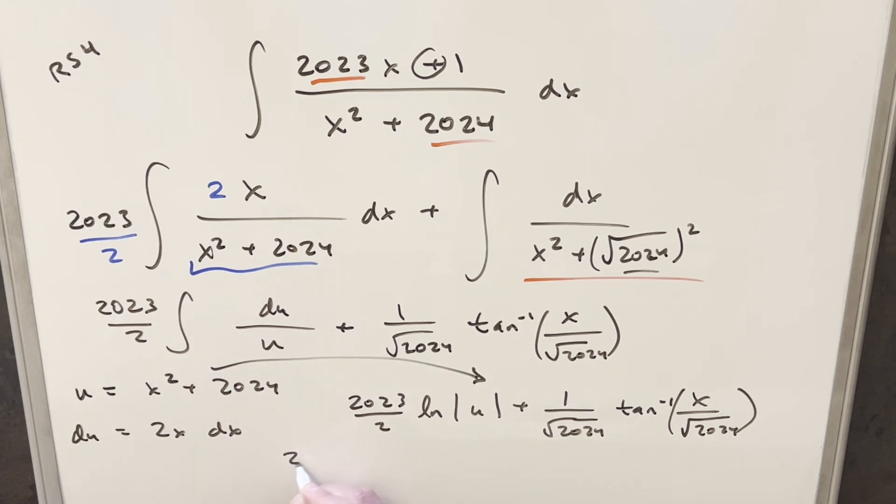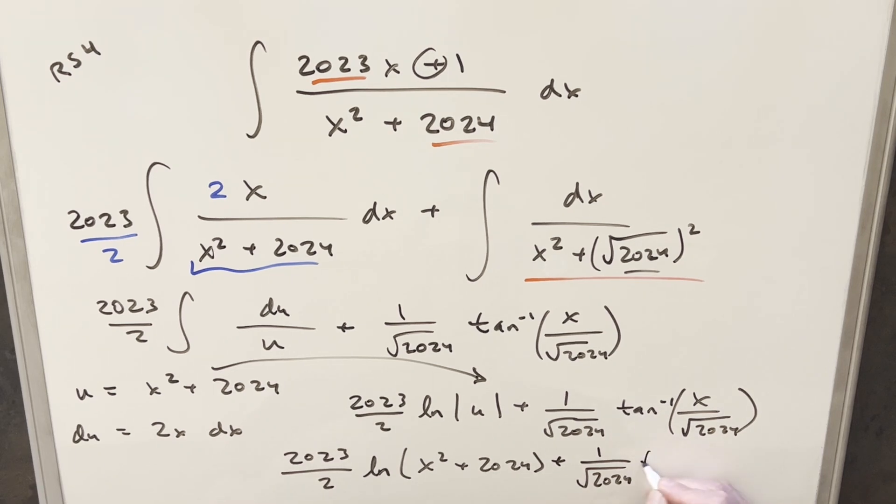So for the final solution, we're going to have 2023 over 2, natural log. I'm going to drop the absolute value because this is always positive. So this is going to become x squared plus 2024 plus 1 over square root 2024 Arctan of x over square root 2024. Add a plus c, barely enough space, and that's it.